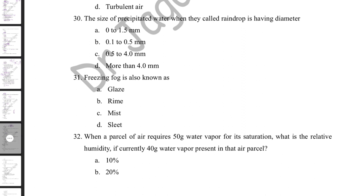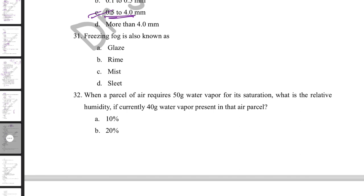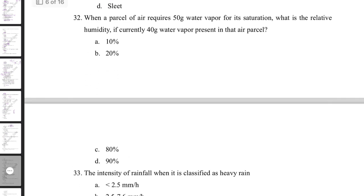The size of precipitated water classified as a raindrop has a diameter of 0.5 to 4 mm. Freezing fog is also called freezing rain, which is also known as glaze. Mist refers to water vapor evaporating before reaching the ground. Sleet refers to solidified ice particles falling to the ground. If an air parcel requires 50 g of water vapor for saturation and currently has 40 g, relative humidity = 40/50 × 100 = 80%.